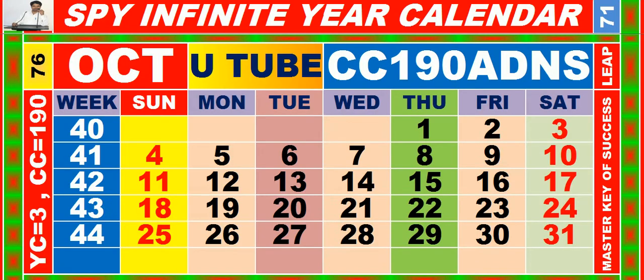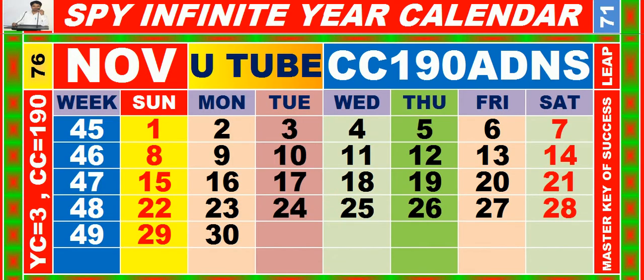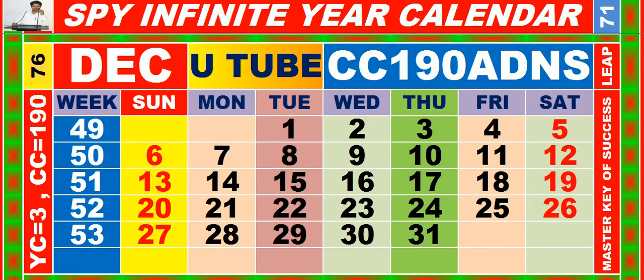Calendar for the month of October having calendar code equal to 190. Calendar for the month of November having calendar code equal to 190. Calendar for the month of December having calendar code equal to 190.